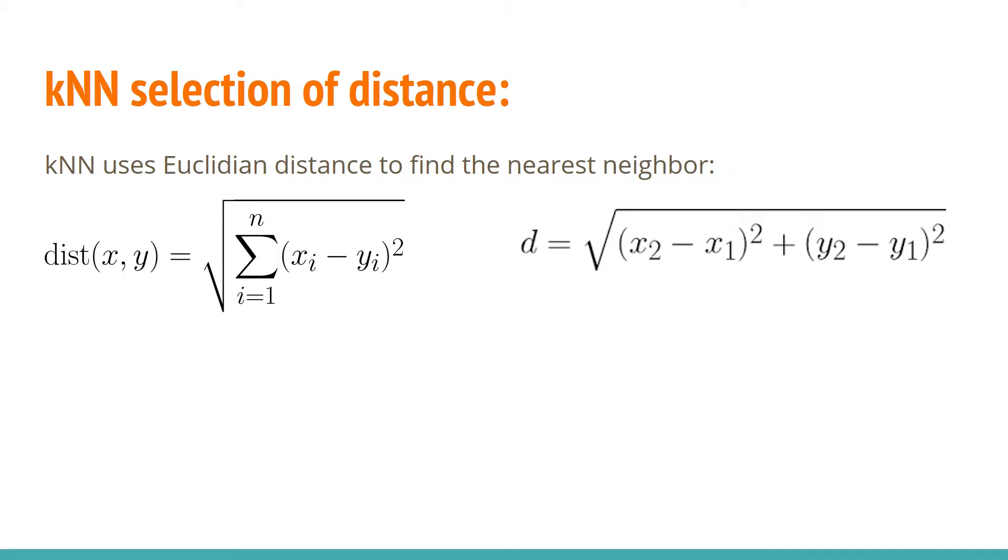As Elena mentioned that KNN uses two approaches, the KNN regression or KNN classification. Both of these approaches use the Euclidean distance formula to calculate the distance between the points to find the nearest neighbor. The distance formula takes the square root of the sum of all these points or examples and then figures out the distance between the points or the nearest neighbor.